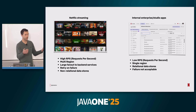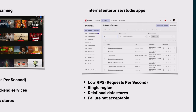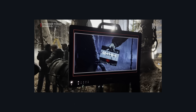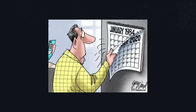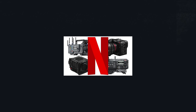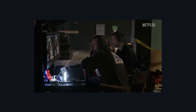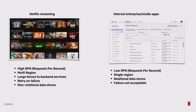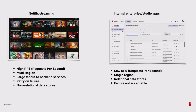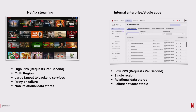The other is probably what you're building at your company — but what Netflix builds internally: studio apps, calendars, equipment tracking, spreadsheets, film production stuff. Low RPS, low traffic applications, much more traditional, same architecture, but wildly different failure tolerances.